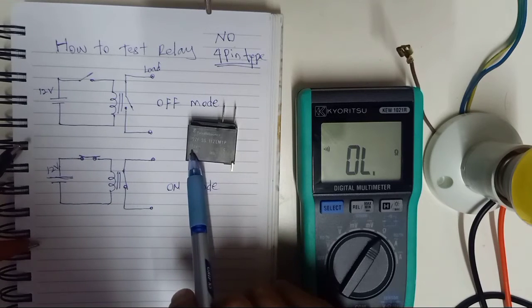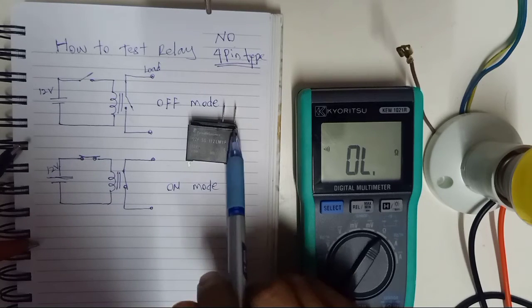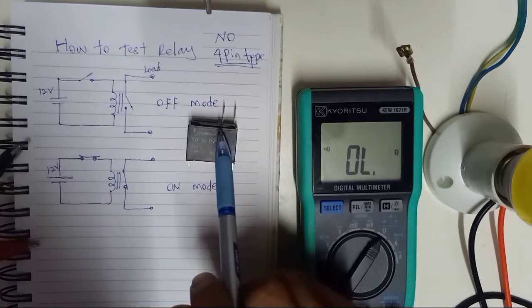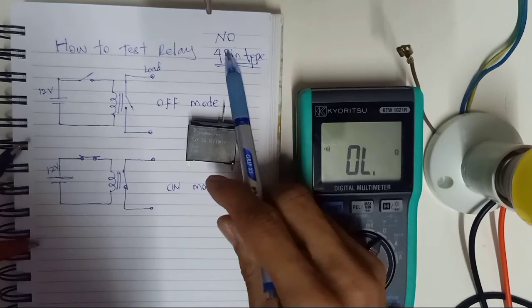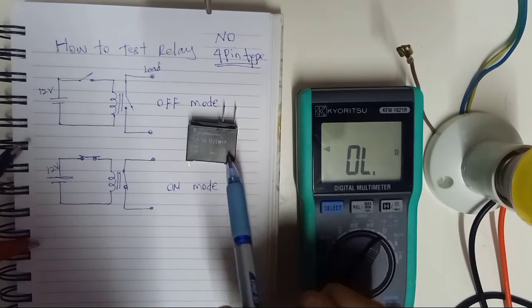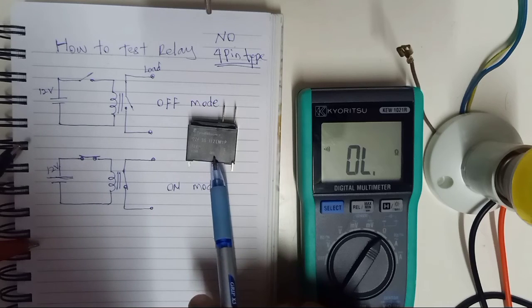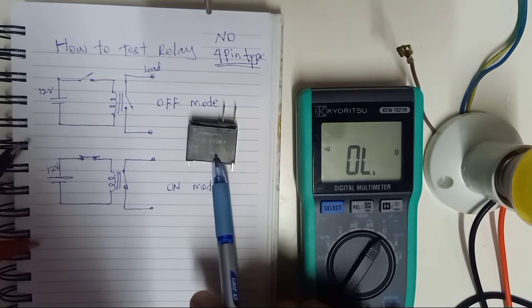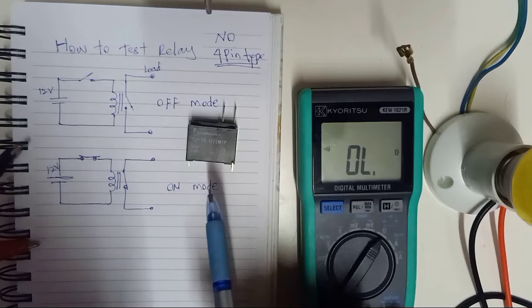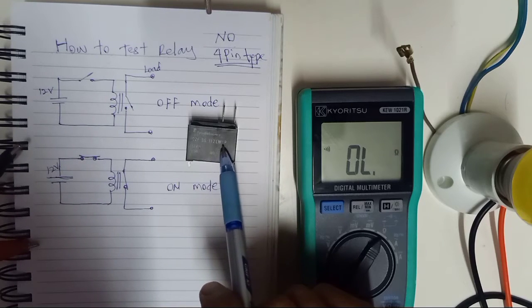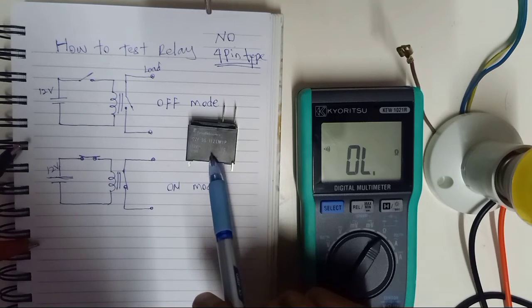We are going to test a 12-volt 4-pin type, normally open relay. This type of relay is normally used in cars, ovens, and microwaves, and for high load ampere applications.